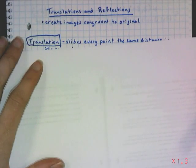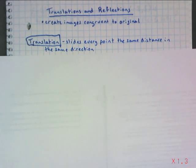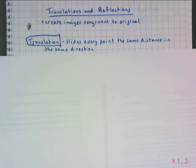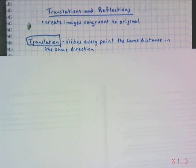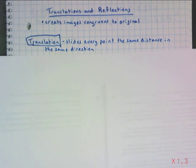With a translation, every point within a figure is going to slide the same direction the same number of units. You have to apply this translation to every single point of the figure.